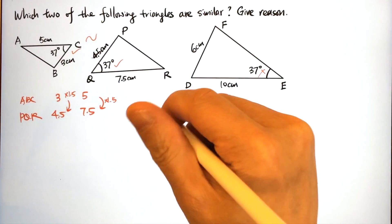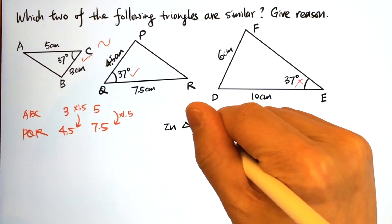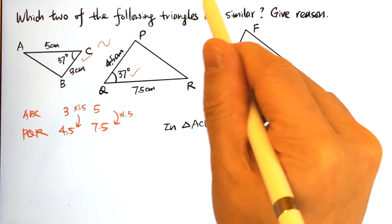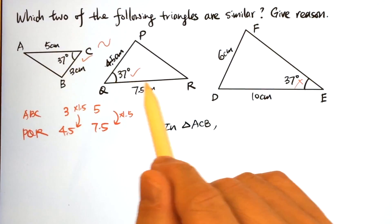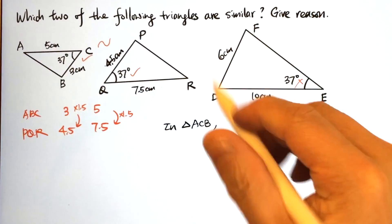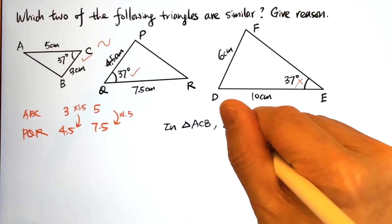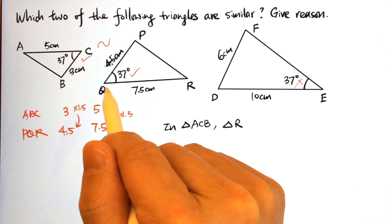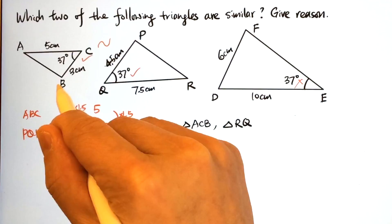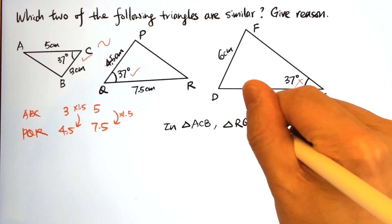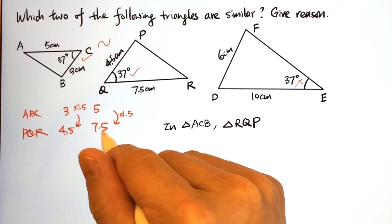Now we can write down the formal steps. In triangle ACB, we have sides 5 and 7.5. Therefore, the correspondence should be A to R, C to Q, B to P. First of all, we compare the sides.